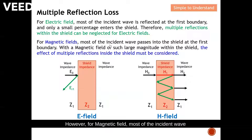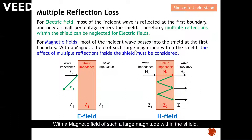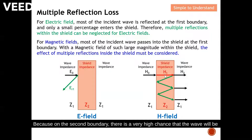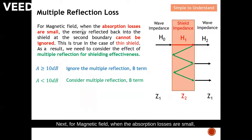However, for a magnetic field, most of the incident wave passes into the shield at the first boundary. As you can see, for a magnetic field, most of the wave penetrates through the first boundary with a large magnitude. Because of this large magnetic field magnitude within the shield, the effect of multiple reflection inside the shield must be considered. At the second boundary there is a high chance the wave will be reflected back, leading to multiple reflections.